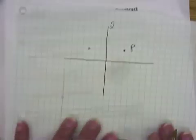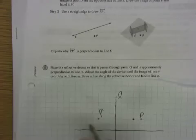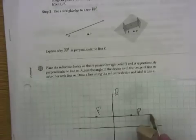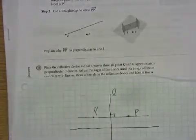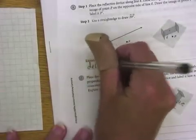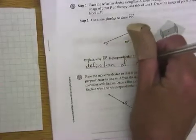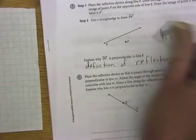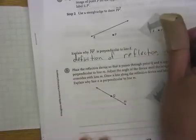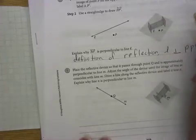This was my point P, this was my line L, and this is the P' that I just found. The question is asking me to explain why P' to P is perpendicular to line L. Because of the definition of reflection, I know that L is the perpendicular bisector of P to P'.